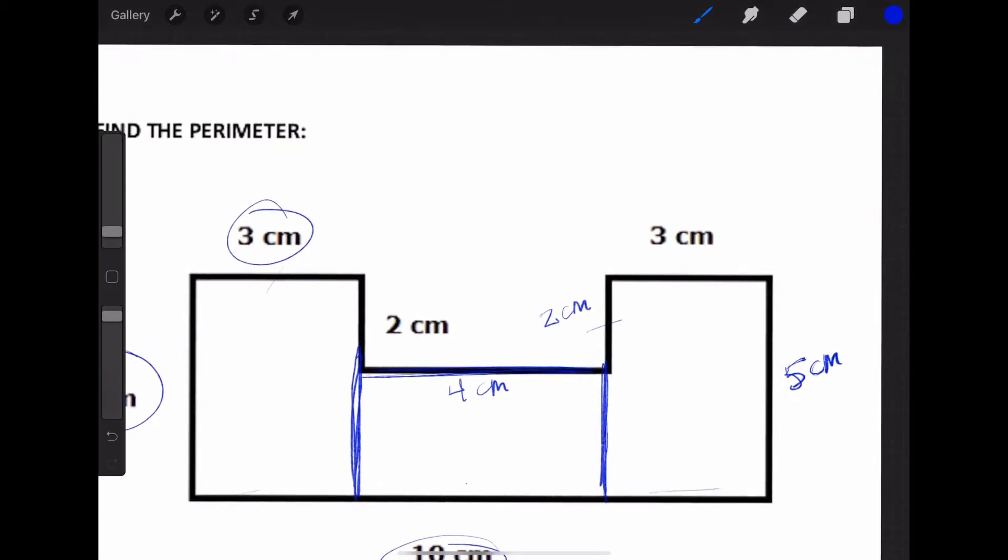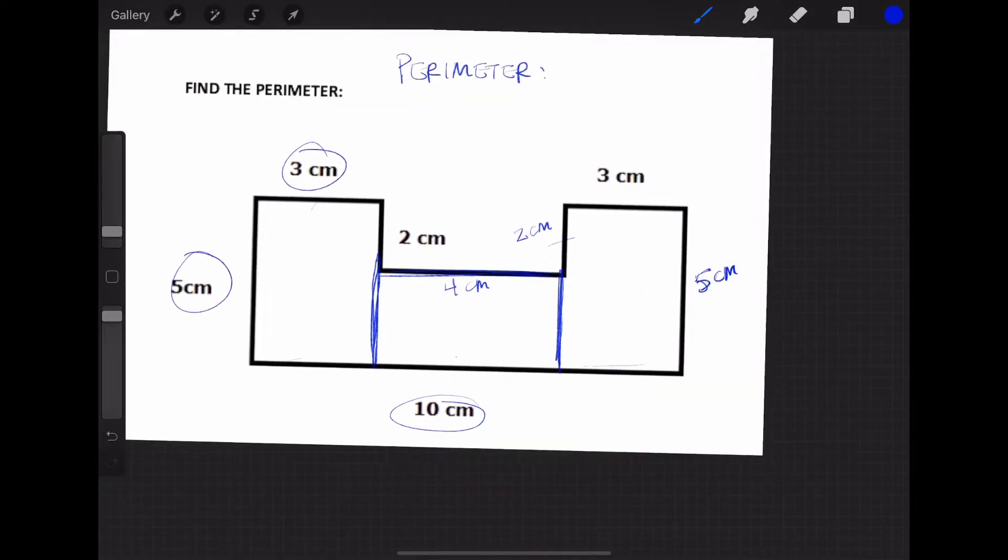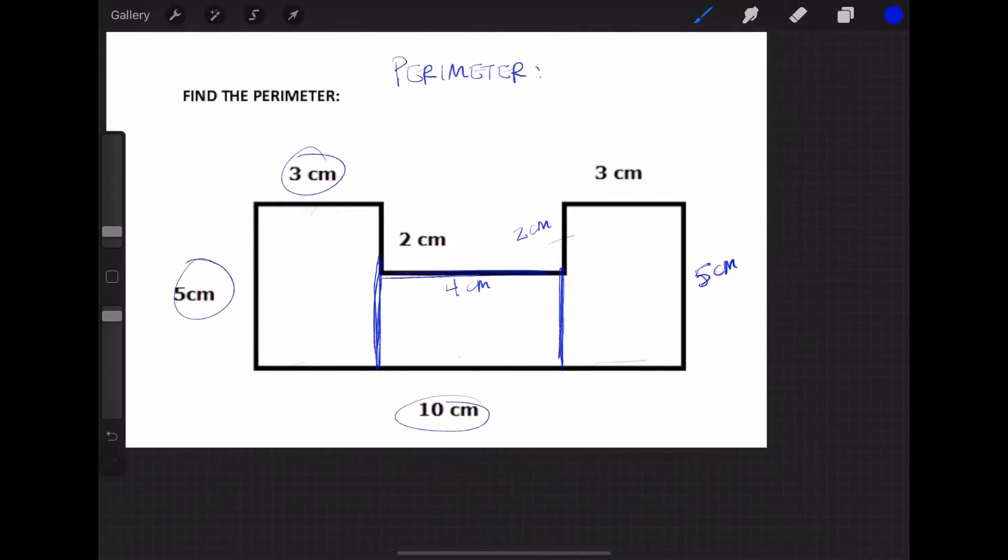Let's go ahead and find the perimeter and area of the shape again, just like we did with the last one. We'll do perimeter first. By just adding up all the sides, we have 10 centimeters, plus 5 is 15, plus 3 more is 18, plus 2 more is 20, plus 4 more is 24, plus 2 more is 26, plus 3 more is 29, and then finally, plus 5 more is 34. So our final perimeter is going to be 34 centimeters.